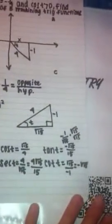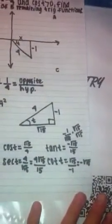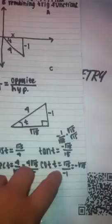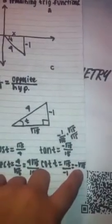The cotangent of t is very easy since we already know the tangent — you just flip it. Flipping negative 1 over square root of 15 gives square root of 15 over negative 1, which equals negative square root of 15. And that's how you find the five remaining trig functions.